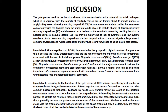From table 1, gram-negative rods at 16% happened to be the group with the highest number of isolates. This is because the family Enterobacteriaceae are the major constituents of normal bacterial contaminants. Staphylococcus aureus and Pseudomonas aeruginosa were equal, and E. coli was second highest, comparing favorably with the research of Hamwell et al. carried out in 2014.